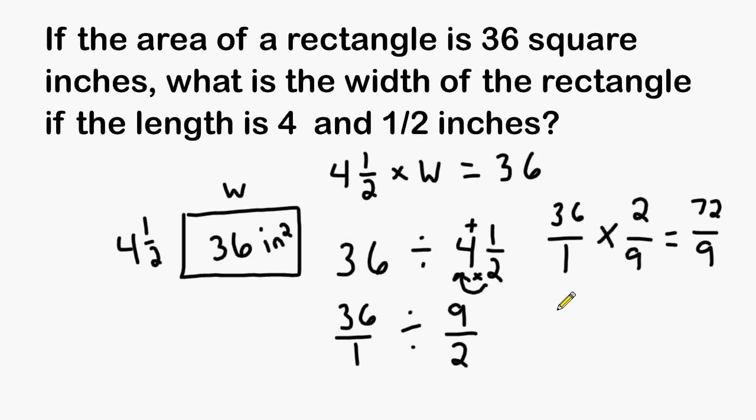Now we have an improper fraction of 72 over 9. When you have an improper fraction for an answer, to write it in simplest form, just divide the numerator by the denominator. 72 divided by 9 is equal to 8.